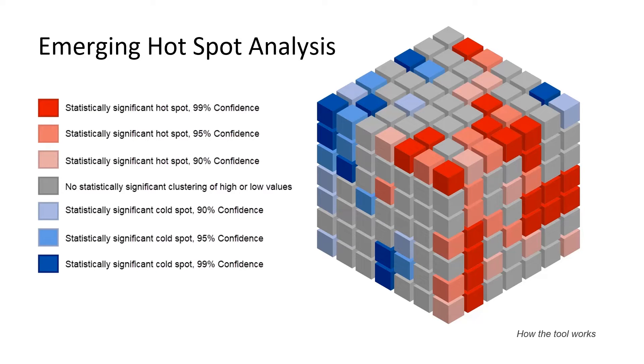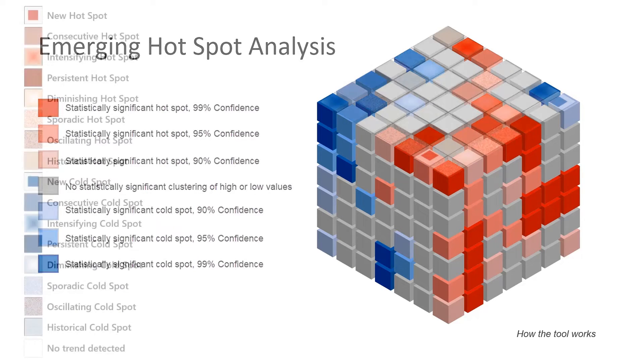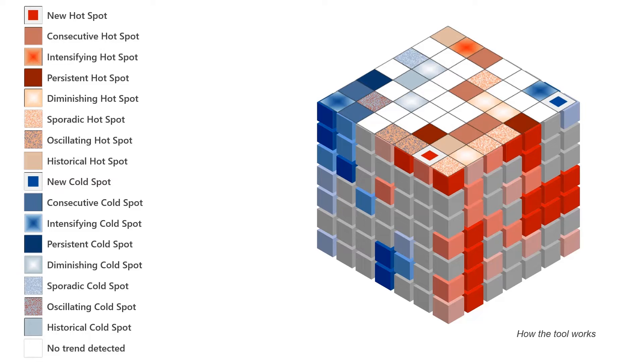After classifying each bin in the cube as a statistically significant hotspot with 99% confidence, or a statistically significant cold spot with 90% confidence, or a bin where there's no statistically significant clustering, and so forth, it categorizes the values in each column based on the pattern of hot and cold spots it contains, and it assigns one of 17 different trends to each column.